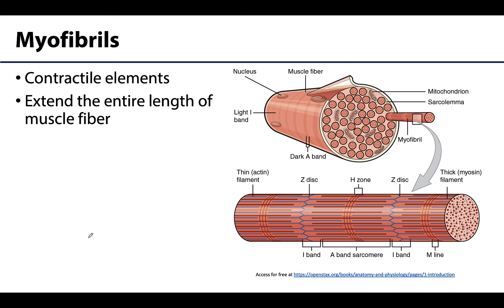Returning to myofibrils — these are the contractile elements of the muscle cell. One myofibril extends the entire length of the muscle fiber. Myofibrils have very prominent striations, and it is these striations that really give skeletal muscle its characteristic striped appearance. We'll talk about what actually composes these myofibrils — specifically, myofilaments.